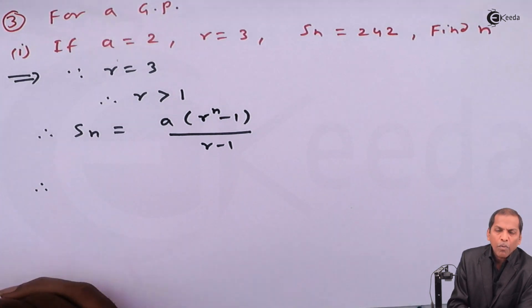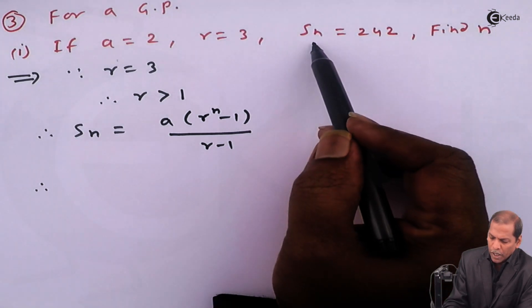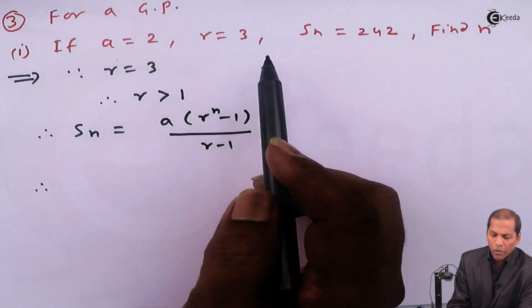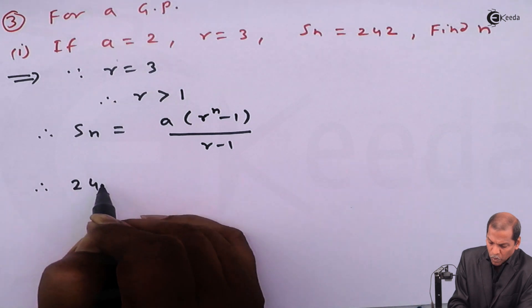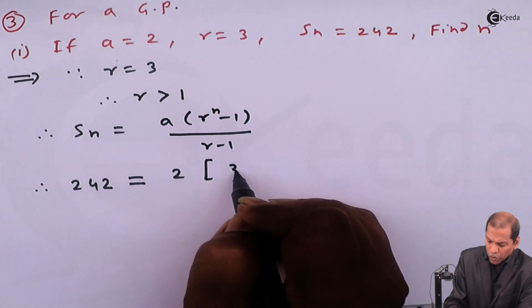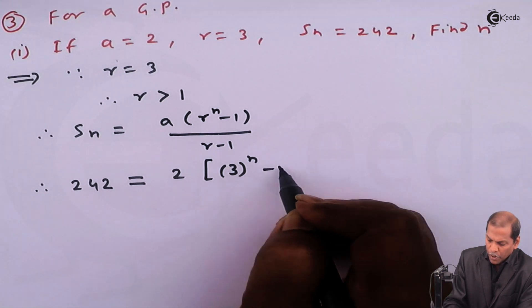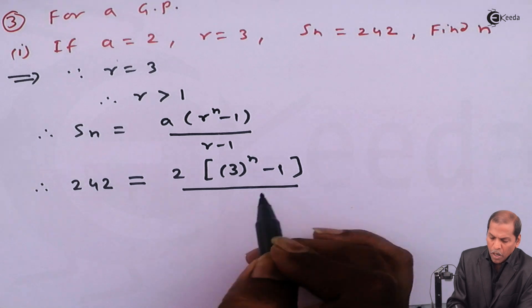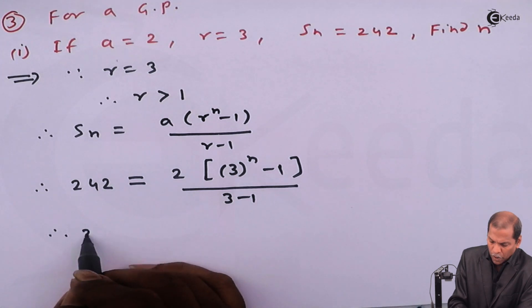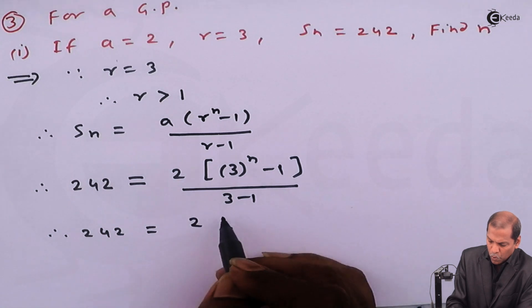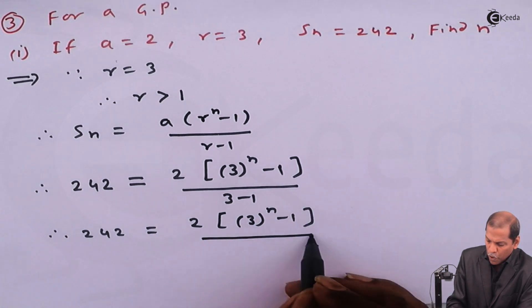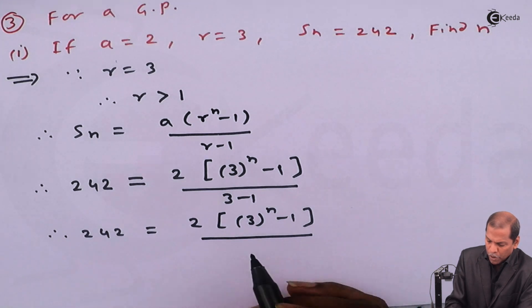Now in this formula, we substitute Sn equals 242, a equals 2, and r equals 3. We get 242 is equal to 2 in bracket 3 raise n minus 1, we write as it is upon in the denominator 3 minus 1 we get 2.